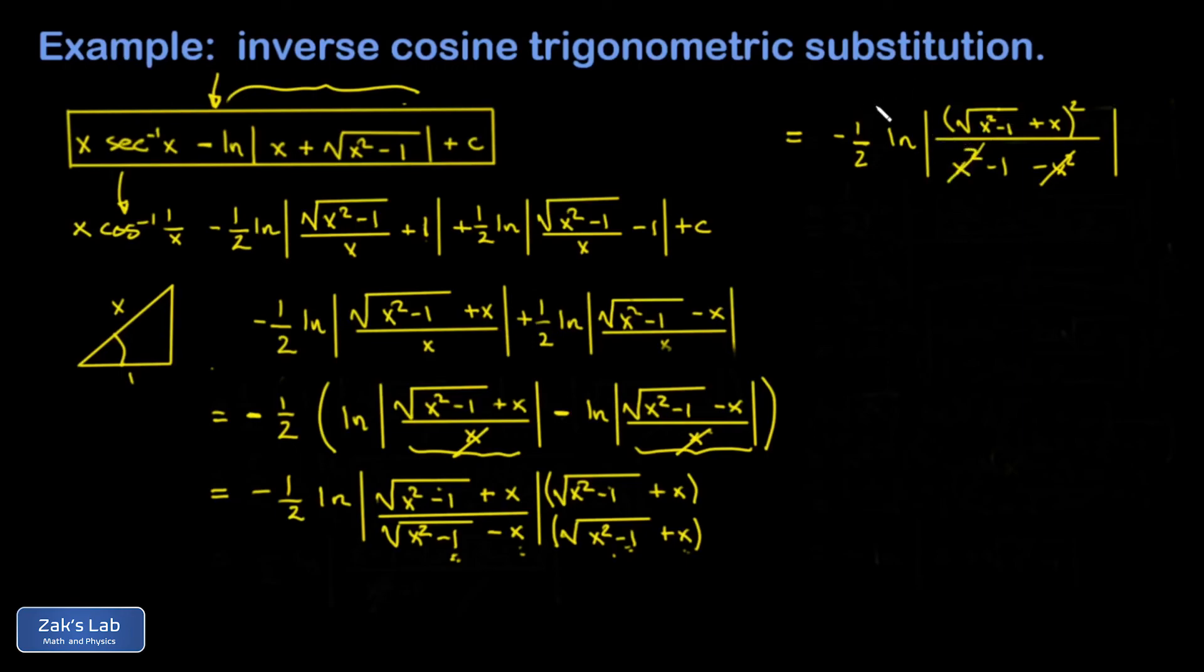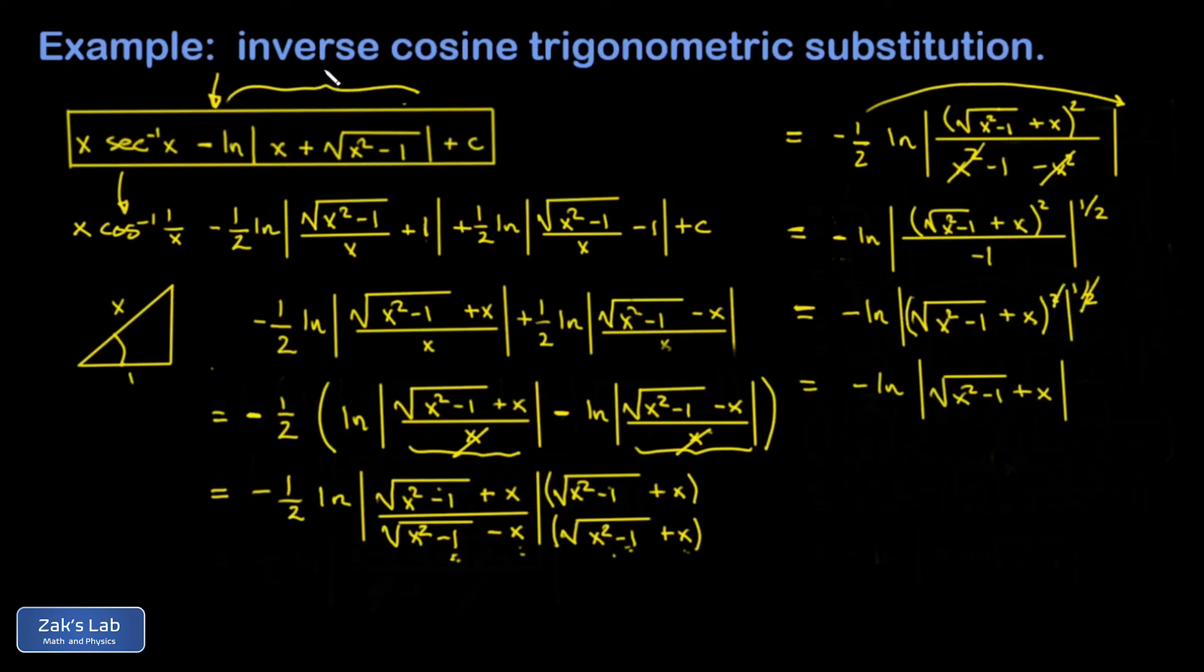And the trick is that with a one half out in front of this natural log, I can move that up into the exponent and it will undo the squaring. And there's a minor inconvenience here. I'm dividing by negative one. Well, we're taking the absolute value of it. So we can ignore that. Now squaring something and raising to the one half power, those cancel each other out. And we've successfully shown that the natural log part that was given by a computer algebra system agrees with the natural log part that we got by hand.